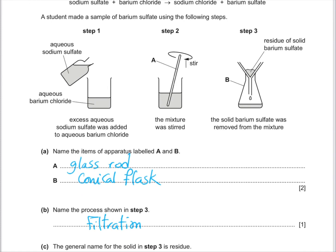After that, he made stirring. He made stirring of the mixture and residue, which is barium sulfate. He said that the solid barium sulfate was removed from the mixture. He wants to know what is called glass rod. The solid barium sulfate is collected using conical flask.